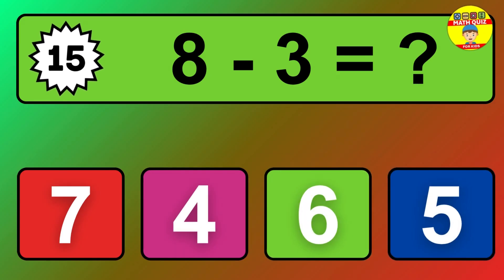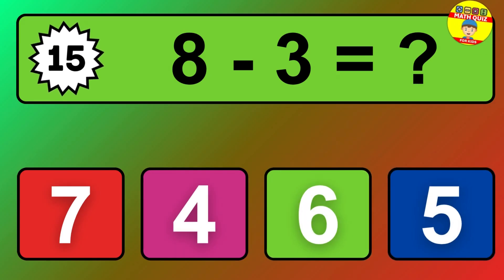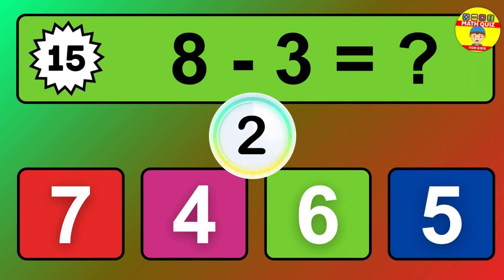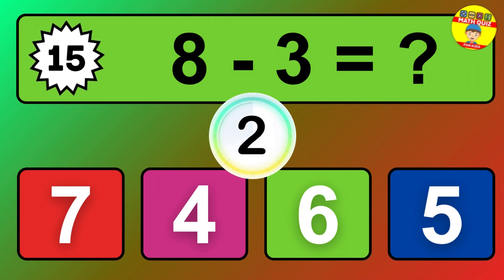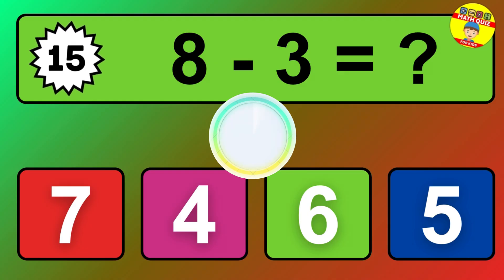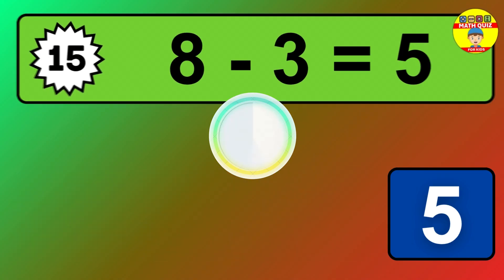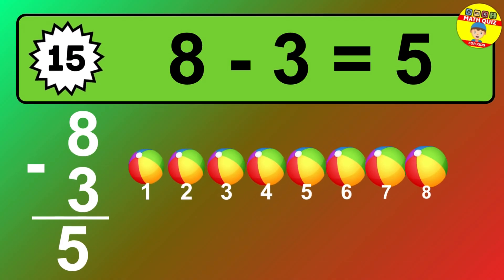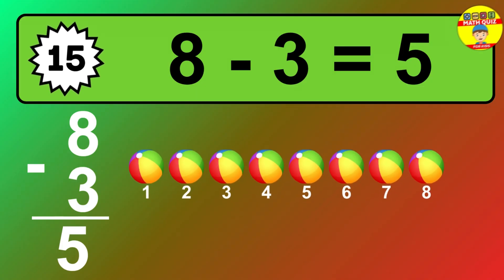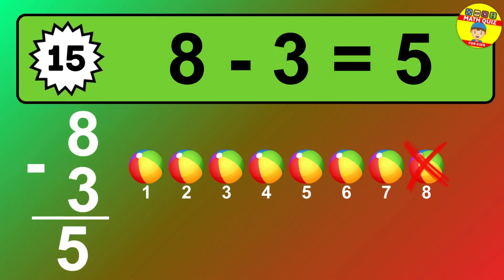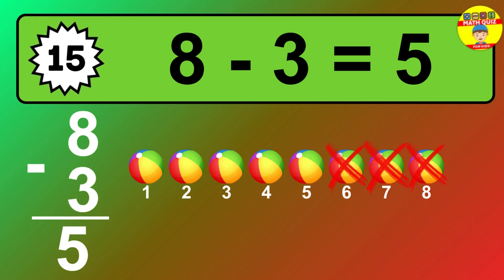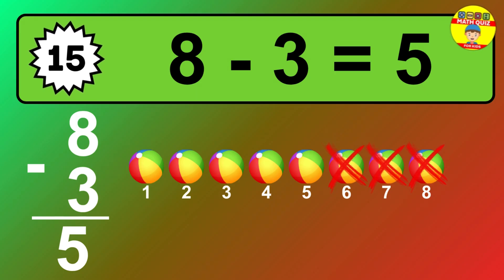Question fifteen: eight minus three equals what? So the answer is eight minus three is five. Let's count it: one, two, three, four, five.